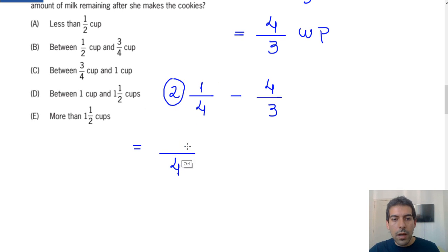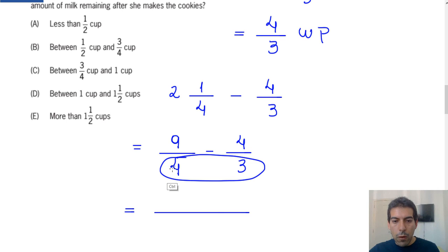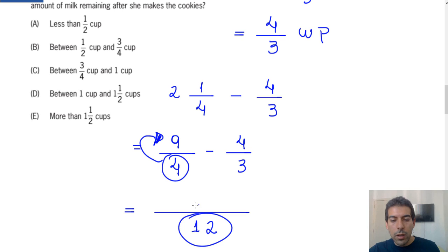So 9/4 minus 4/3. If we consider the least common multiple of 4 and 3, the value is 12. We divide the least common multiple by each denominator and multiply by the numerator. 12 divided by 4 is 3, 3 times 9 is 27, and 12 divided by 3 is 4, 4 times 4 is 16. So the remaining amount of milk is 11/12 cups of milk.